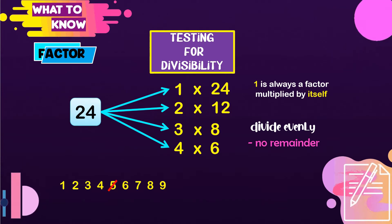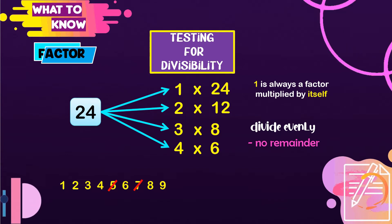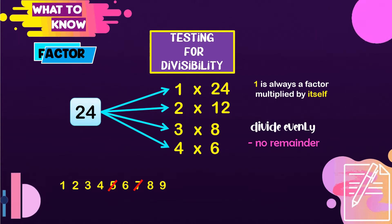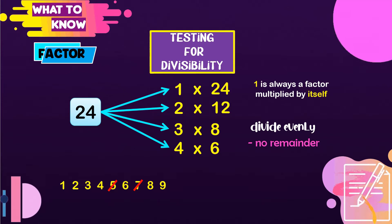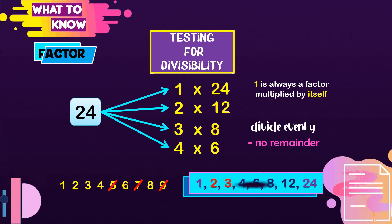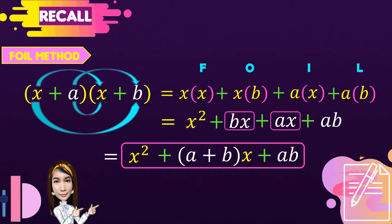24 is not divisible by 5. 24 is divisible by 6 because 4 times 6 is the same as 6 times 4. 24 is not divisible by 7. And 24 is divisible by 8 because 3 times 8 is the same as 8 times 3. So, the list of all factors of 24 are 1, 2, 3, 4, 6, 8, 12, and 24.